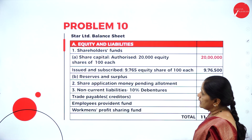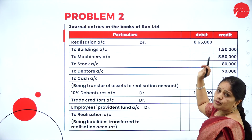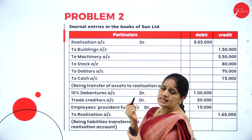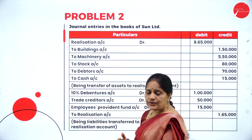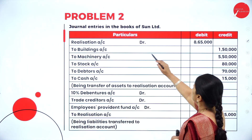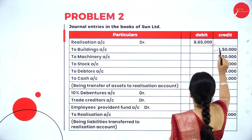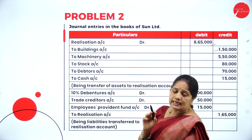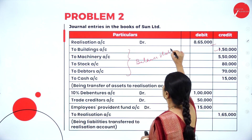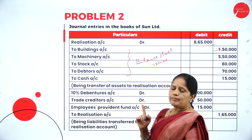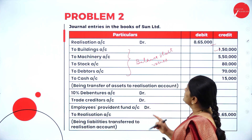Journal entries in the books of Sun Limited. All assets taken over by the purchasing company are transferred to the debit side of the realization account at balance sheet values — not agreed values. Realization account debited 8,65,000 to buildings 1,50,000, and other assets. When transferring to realization account it will always be at balance sheet values; agreed values are used only for purchase consideration.